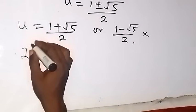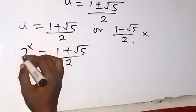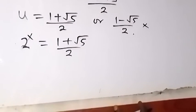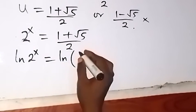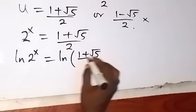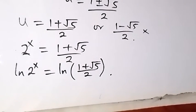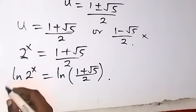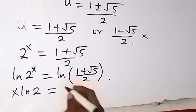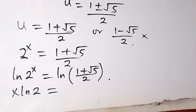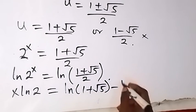Since our u is 2 raised to power x, we can say 2 raised to power x equals 1 plus root 5 over 2. Taking the natural log on both sides, we have ln of 2 raised to power x equals ln of the quantity 1 plus root 5, over 2. Applying the log power rule, the exponent x comes to the front, giving x times ln 2. On the right side, we apply the log quotient rule, separating it as ln of 1 plus root 5, minus ln 2.